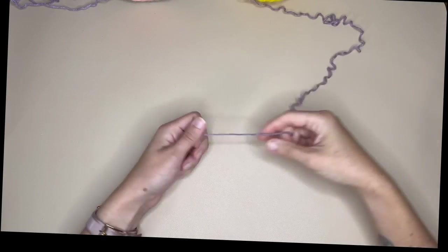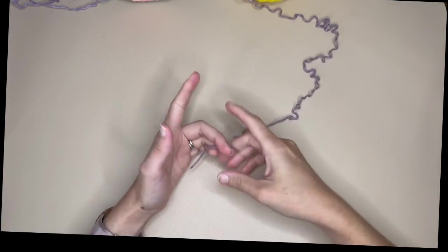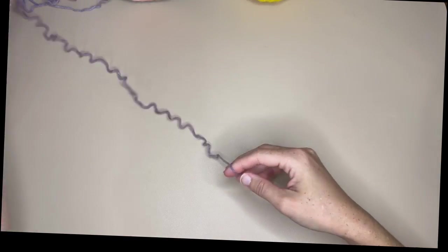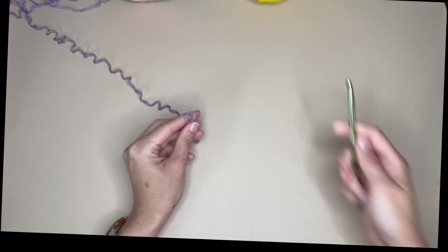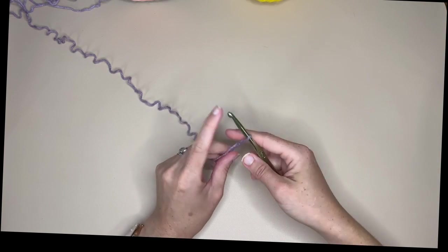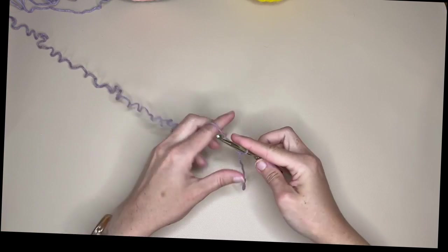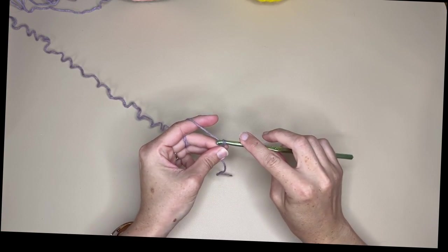All right so once you find the end of your yarn we are going to start out with a slip knot. We're going to grab our hook. All right so we're going to start off by chaining 28.